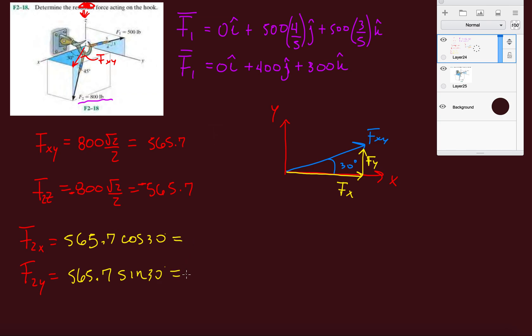So let's find that out. 565.7 times cosine 30, 489.9 pounds. Is it pounds? Yeah, pounds. And then 565.7 times sine 30, 282.9 pounds. Now we have each component of this F2 force. So F2 in Cartesian coordinates is going to be 489.9i plus 282.9j minus 565.7K.